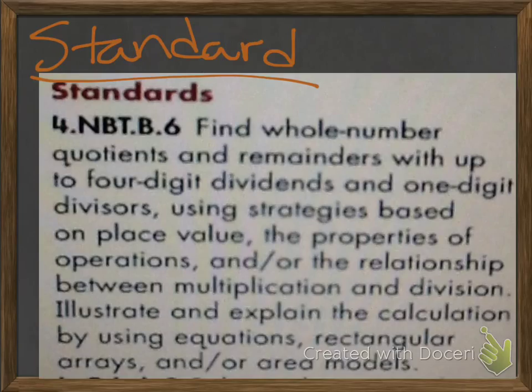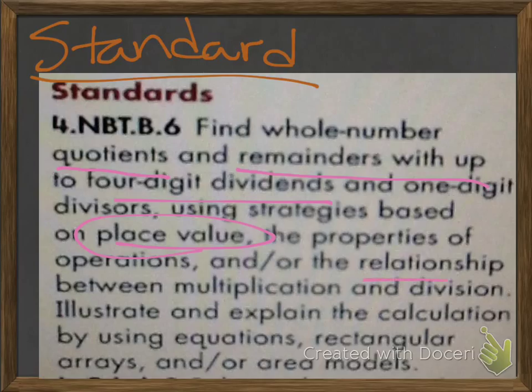Our standard is to find whole number quotients and remainders with up to 4-digit dividends and 1-digit divisors using strategies based on place value, the properties of operations, and the relationship between multiplication and division.